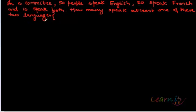What is given to us? Let me just write down what is given to us. First of all, let's denote E as a symbol for the set of people who speak English and F, set of people who speak French.